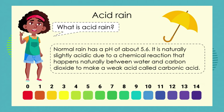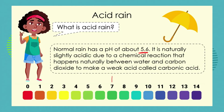Normal rain has a pH of about 5.6. Now that might be quite surprising to you. You might have thought that it's water and water has a pH of about 7 because pure water is a neutral substance, but rainwater is in fact somewhere between pH 5 and pH 6. So rainwater is naturally a very weak acid.